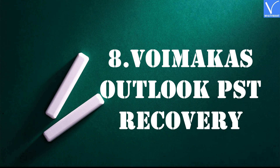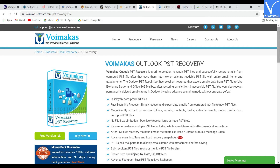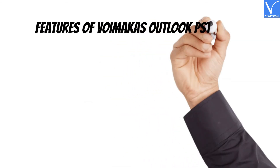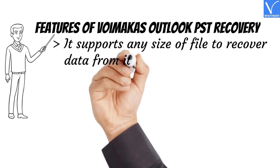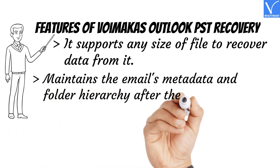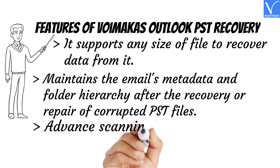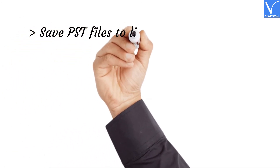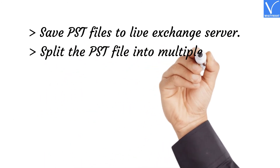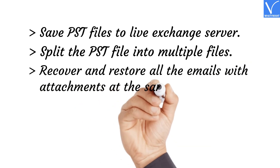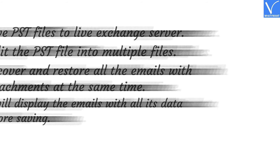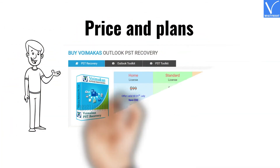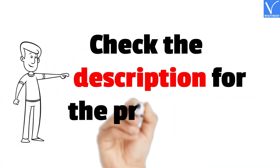Number 8: Boimica's Outlook PST Recovery. Boimica's Outlook PST Recovery is a prime solution to recover emails and their data from corrupted PST files. It has excellent features such as exporting email data from PST to Live Exchange Server, Office, and Office 365 after recovery. Features: It supports any size of file for data recovery. Maintains email metadata and folder hierarchy after recovery. Advanced scanning, save and load recovery snapshot. Save PST files to Live Exchange Server. Split PST files into multiple files. Recover and restore all emails with attachments. Displays emails with all data before saving. The price and plans of Boimica's Outlook PST Recovery are shown on the screen. Check the description for the product link.